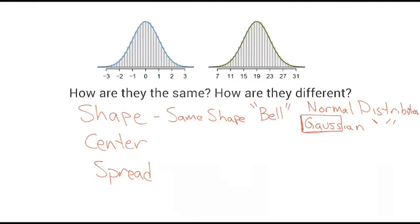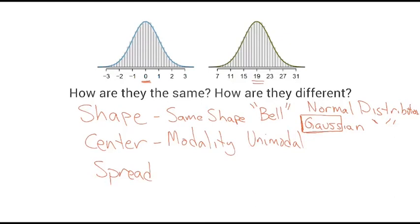When we're dealing with the center, we also talked about modality. Both of these are unimodal, which means they have one mode. The numbers for the centers are zero and nineteen. For the spread: the first one goes from negative three to three, so most of it is between negative three and three — a spread of six. The other one goes mostly between seven and thirty-one, so it has a spread of twenty-four.